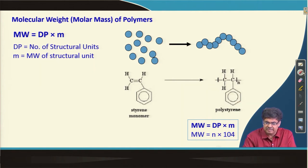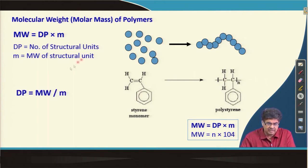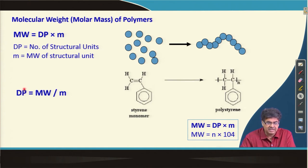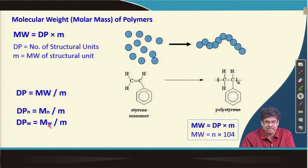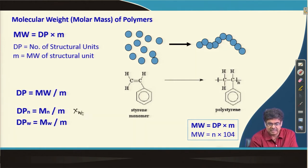We can also express degree of polymerization as molecular weight divided by M_0. Because molecular weights are averages, degree of polymerization is also expressed as different average degrees of polymerization. If we use number average molecular weight, we call it number average degree of polymerization X_n; if we use weight average molecular weight M_w, we call it weight average degree of polymerization X_w.